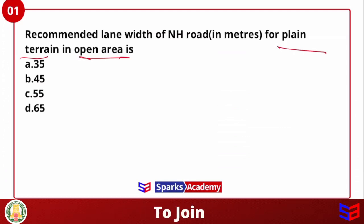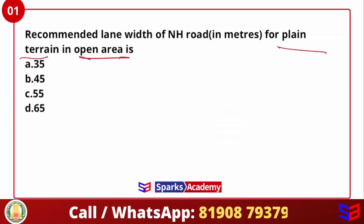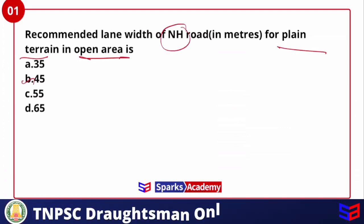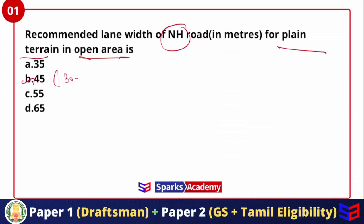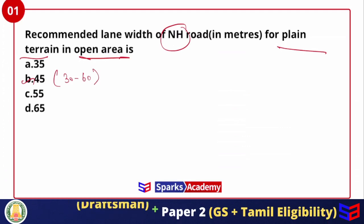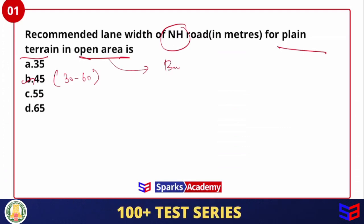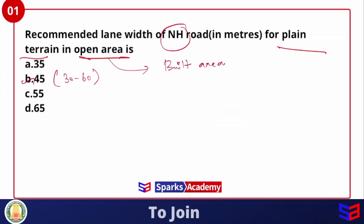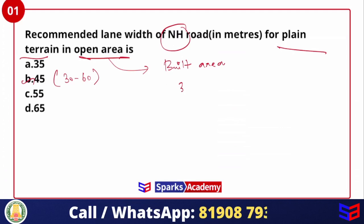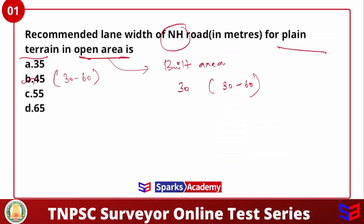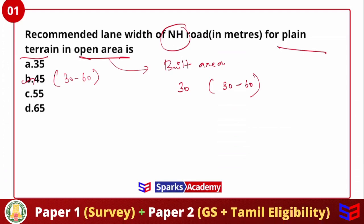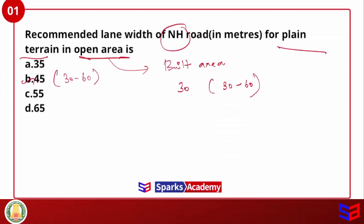The recommended value for NH Road in plain terrain open area is 3.5 meters, and the range is 3.0 to 6.0 meters. In built-up area, the standard value is 3.0 meters and the range remains 3.0 to 6.0 meters. So just notice the terrain and area combination for the correct answer.